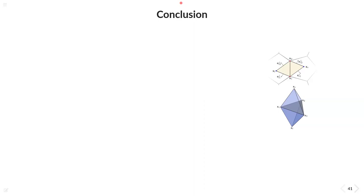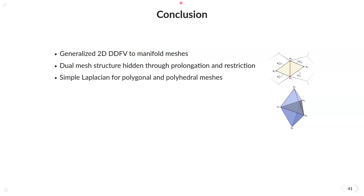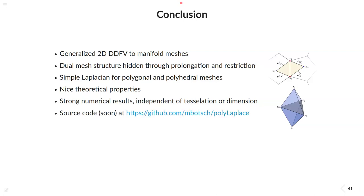But to conclude this talk we were able to generalize the 2D DDFV method to two-manifolds in 3D and we were also able to find at least to our knowledge the first simple Laplacian operator for general polygon and polyhedral meshes that maps values at vertices to values at vertices with the help of our prolongation and restriction approach. It fulfills many nice theoretical features while its numerical results are really strong and although it may be a bit more expensive than other operators its overall performance leads us convinced that the additional costs are really worth the effort. We will also provide our source code under the following GitHub link which can also be found in the paper and with that thank you for your attention!